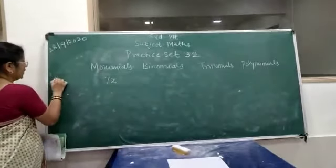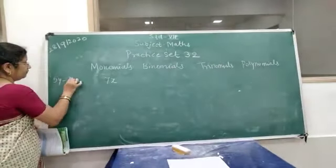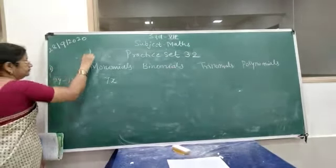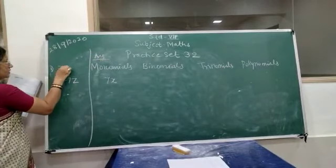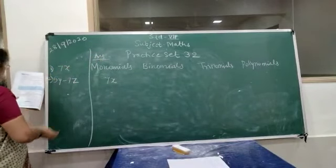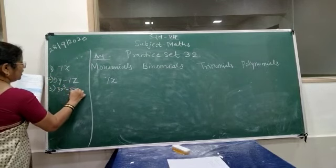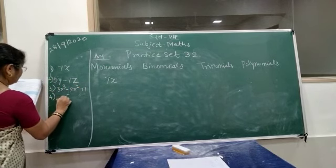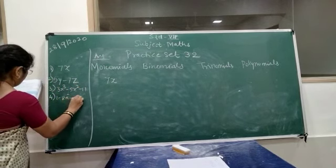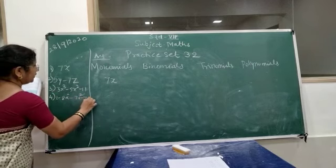See first one, this is what the answer. Now first one is your 7x. Second is 5y minus 7z. Third is 3x cube minus 5x square minus 11. Fourth one, 1 minus 8a minus 7a square minus 7a cube.